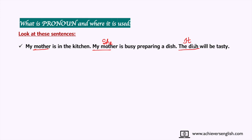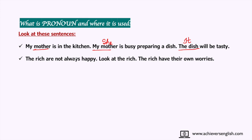Now the sentence reads: 'My mother is in the kitchen. She is busy preparing a dish. It will be tasty.' This sentence is not looking awkward now. Next example: 'The rich are not always happy. Look at the rich. The rich have their own worries.' We introduced 'the rich' in the first sentence, so there is no need to repeat it. In place of repetition, we write: 'The rich are not always happy. Look at them. They have their own worries.'